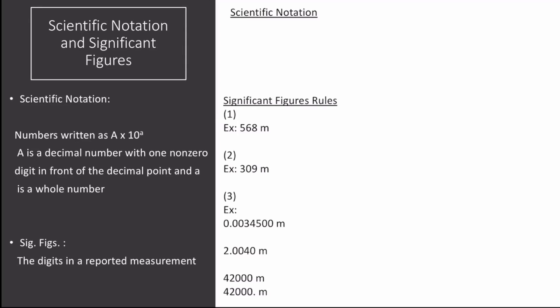The next topic is scientific notation and significant figures. Scientific notation is a way to write whole numbers and decimal numbers in the form big A times 10 raised to the power of little a, where big A is a decimal number with one non-zero digit in front of the decimal point, and little a is a whole number.